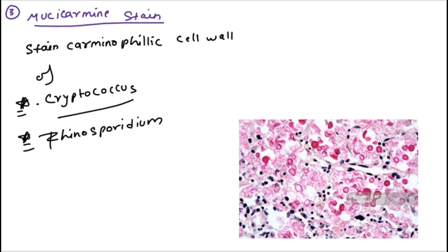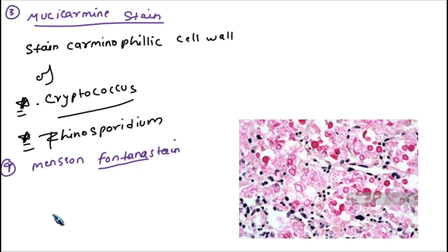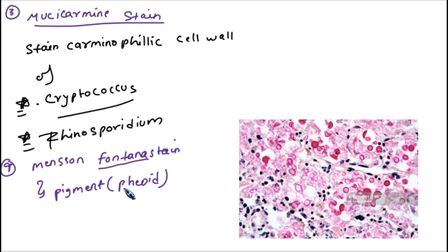The fourth histopathological stain is Masson-Fontana stain. This stain is used for pigmented fungi — also called dematiaceous or pigmented fungi. It is useful only for pigmented fungi.